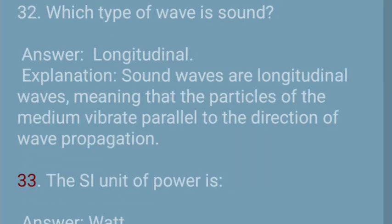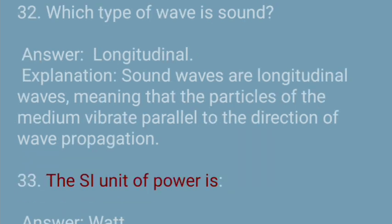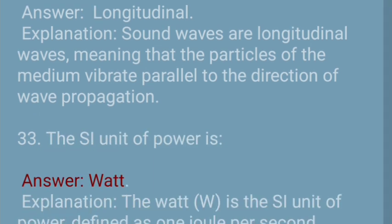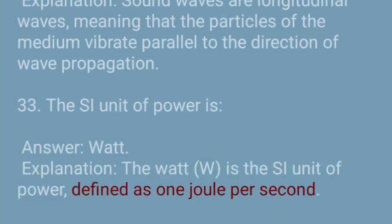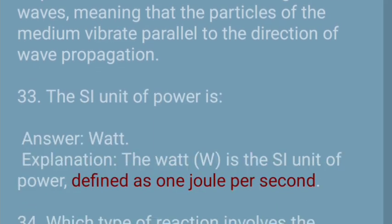Question 33: The SI unit of power is — Answer: Watt. Explanation: The Watt (W) is the SI unit of power, defined as 1 joule per second.